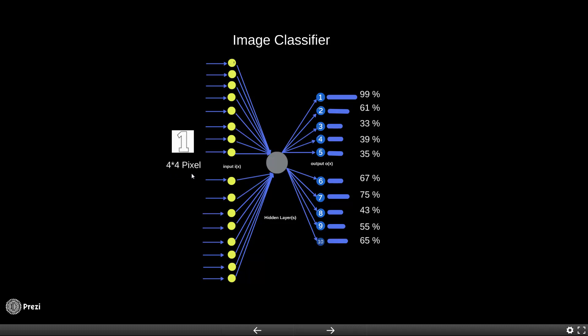That is 16 pixels, so hence you have 16 input nodes. You have an abstracted hidden layer, and on the output side you have 10 nodes because the input could be numbers from 1 through 10.